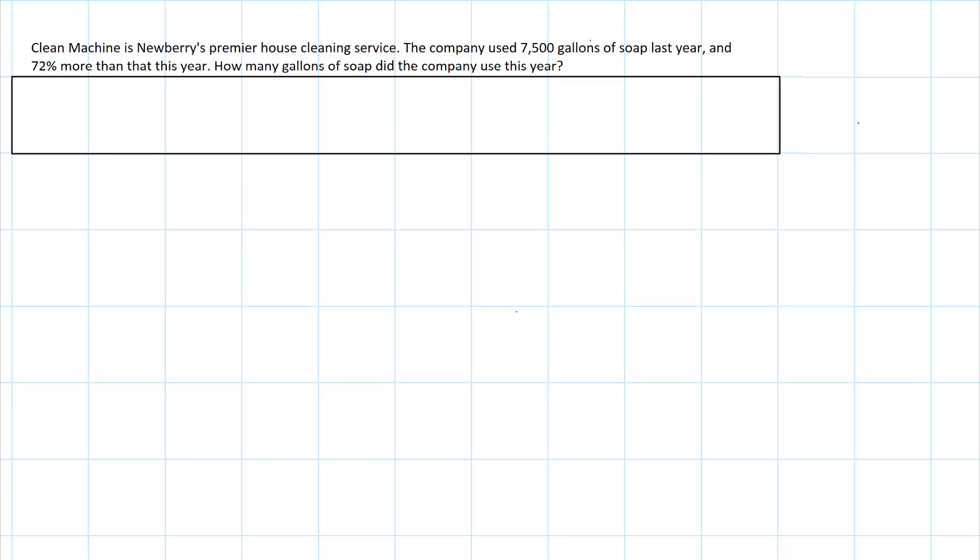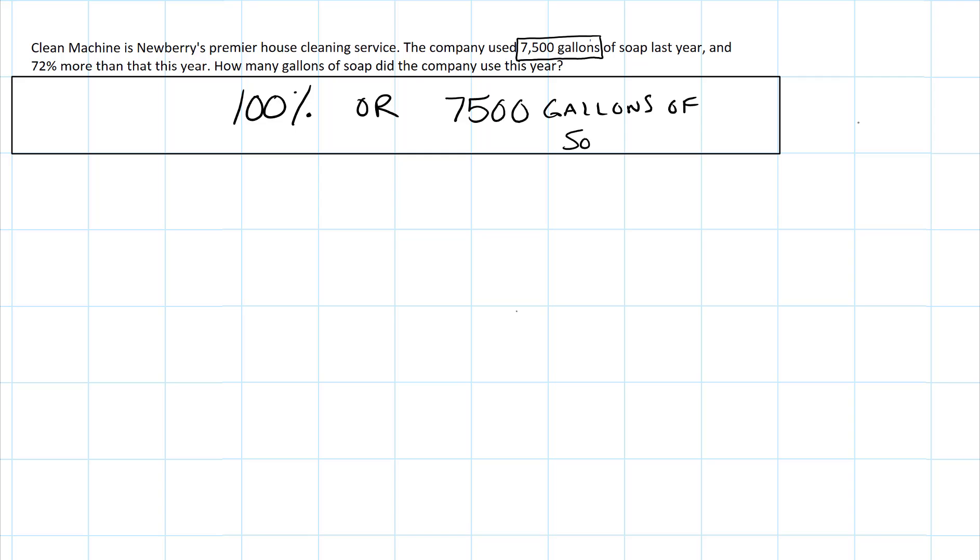We're going to put a tape model of 10 boxes to represent our 100%, so whatever we have as 100%. And in this particular case, the question says the Clean Machine is Newberry's premier house cleaning service. The company used 7,500 gallons of soap last year. So that's going to be our 100%. And 72% more than that this year. How many gallons of soap did the company use this year?